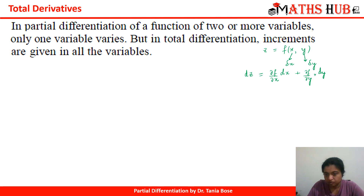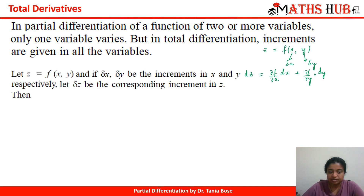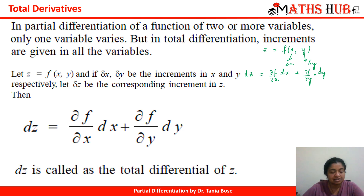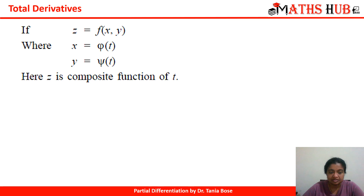If there are more than two variables, we simply add that component as well. This is known as total differentiation. Formally: if Δx and Δy are the increments in x and y, and Δz is the corresponding increment in z, then the total derivative dz equals (∂f/∂x)dx + (∂f/∂y)dy, and dz is called the total differential of z.